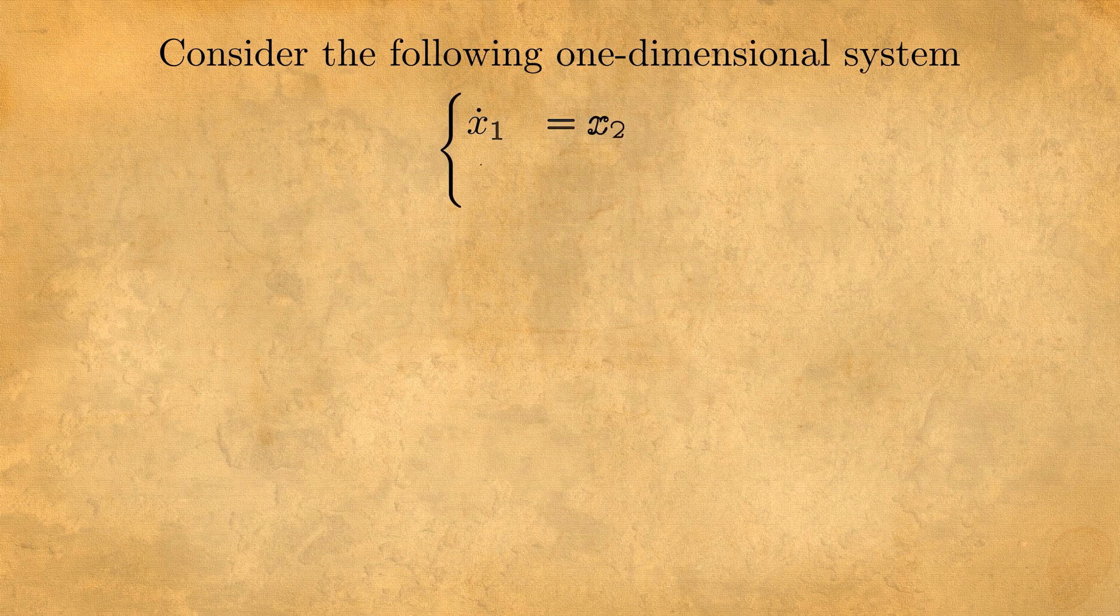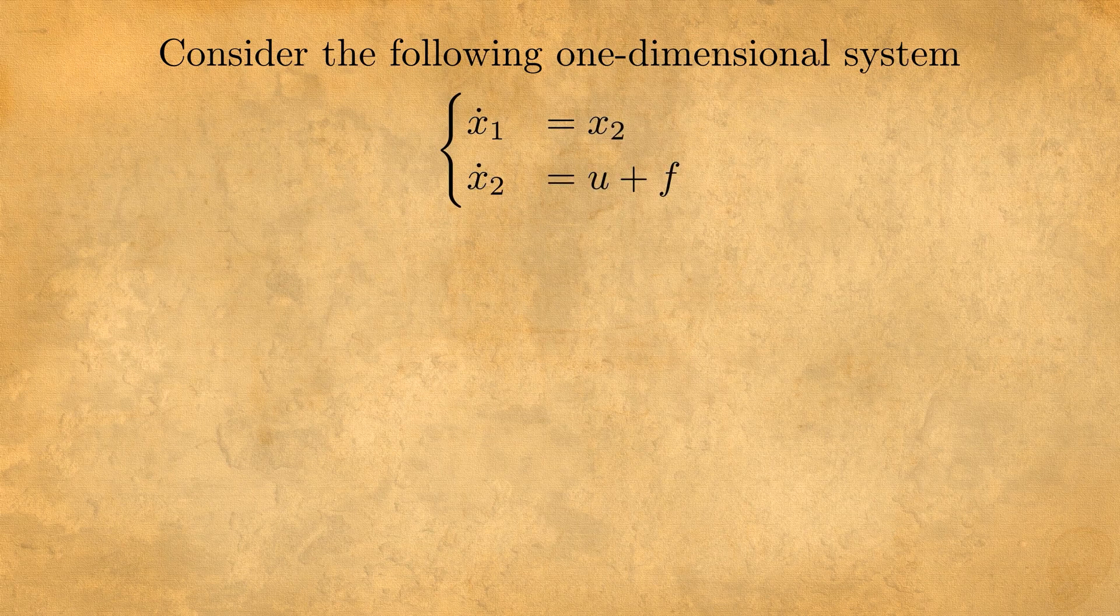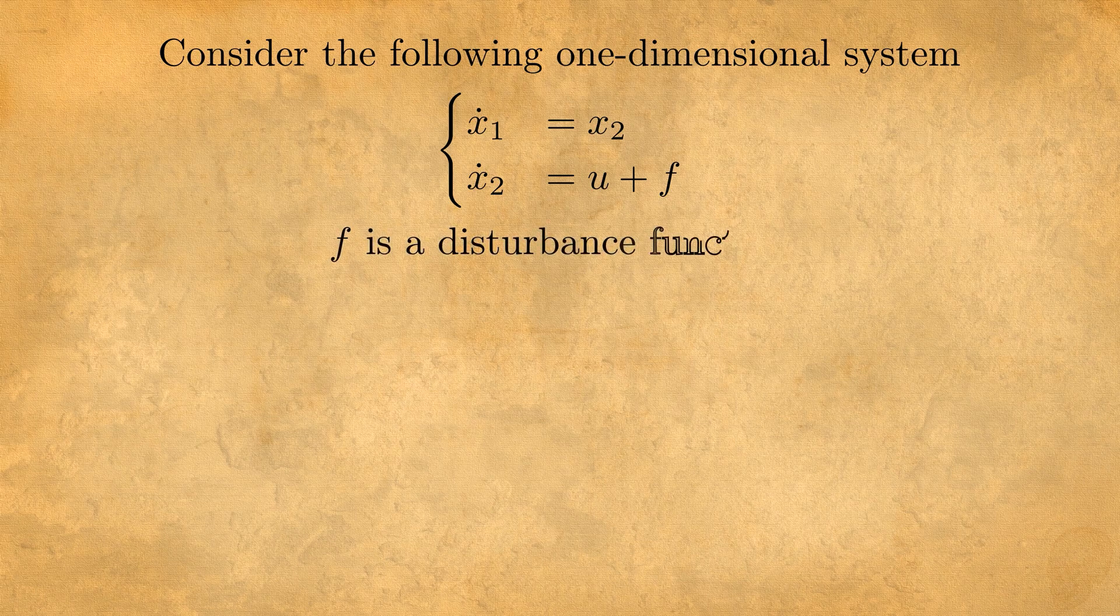So what we do is we consider the following one-dimensional system where you have x1 dot equal x2 and x2 dot equals u plus f where f is a disturbance function.